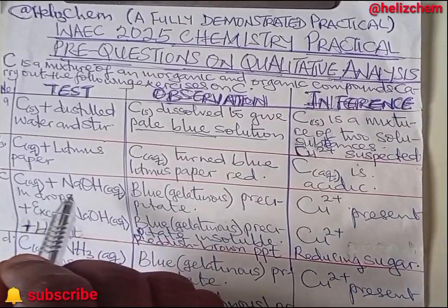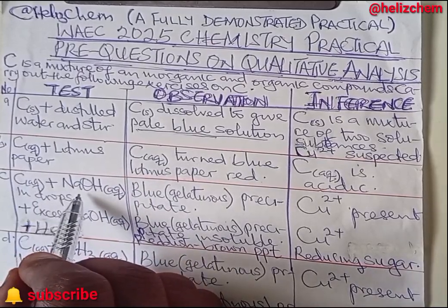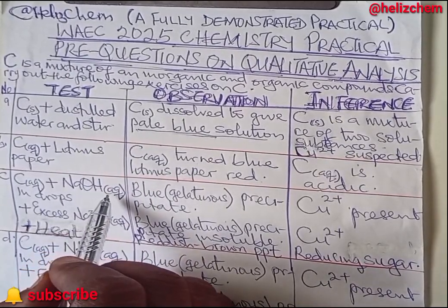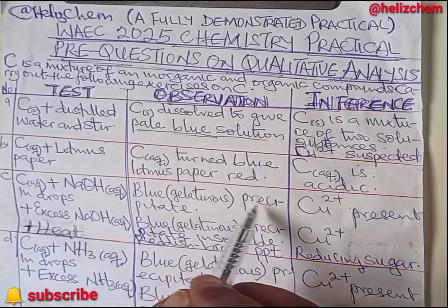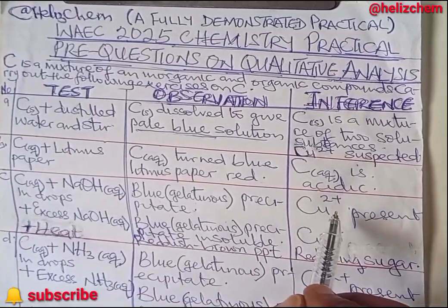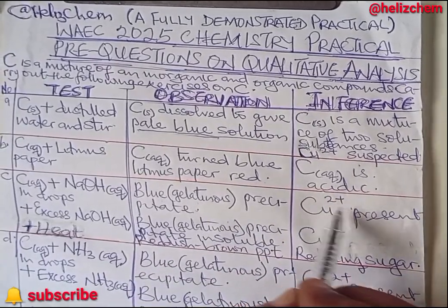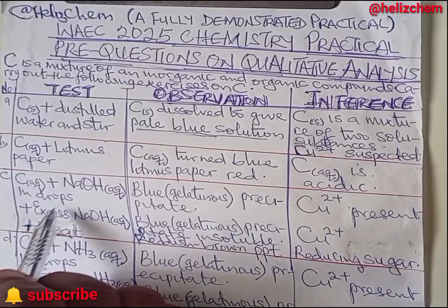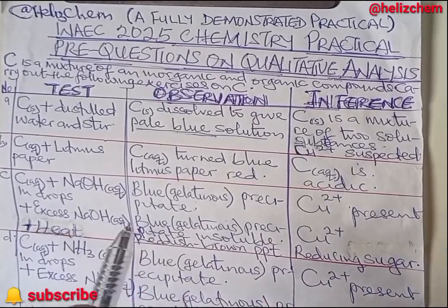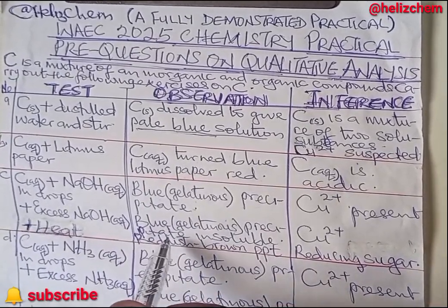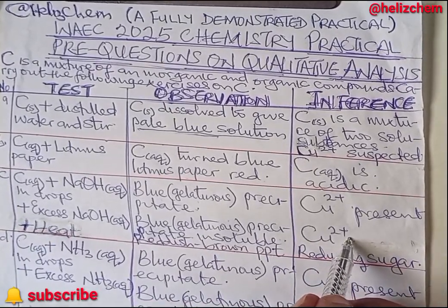Test C: Take a little amount of the aqueous solution of C and add sodium hydroxide solution in drops. The observation is blue gelatinous precipitates form. Because you have blue gelatinous precipitates, copper(II) ions are present. Then add excess sodium hydroxide — we discover that the blue gelatinous precipitates remain insoluble, which also confirms copper(II) is present.